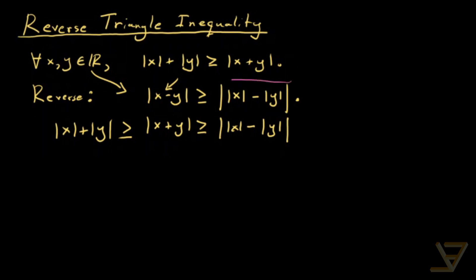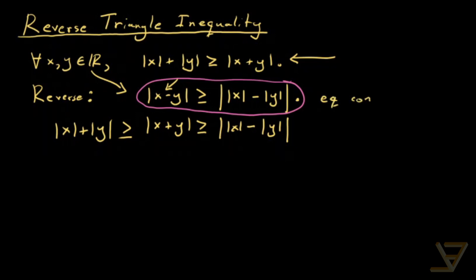So let's try to prove this inequality. I'm going to show you two proofs. One uses the technique of squaring, which is also used in proving the regular triangle inequality, and it's going to help with the equality condition — we'll discover what that equality condition is once we do the proof. The other proof uses the triangle inequality to prove the reverse triangle inequality, but it's more difficult to derive the equality condition from it.